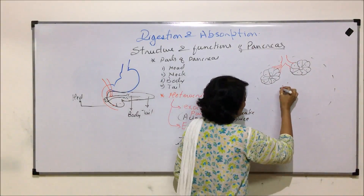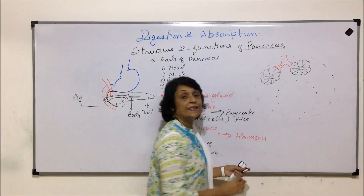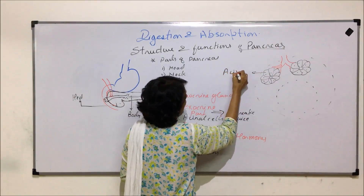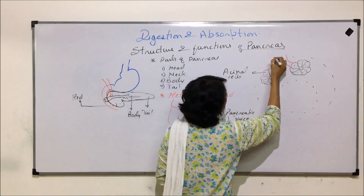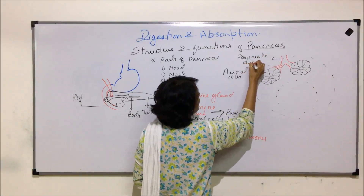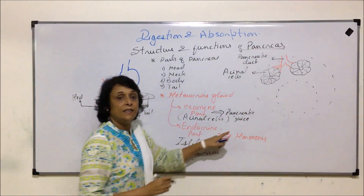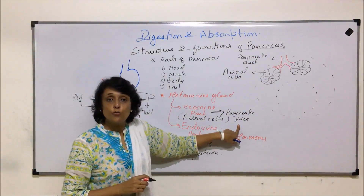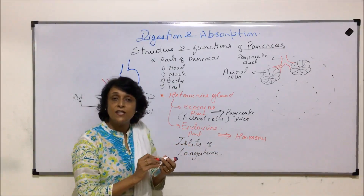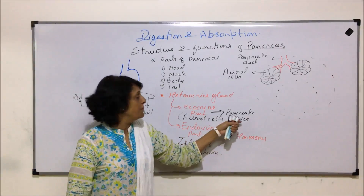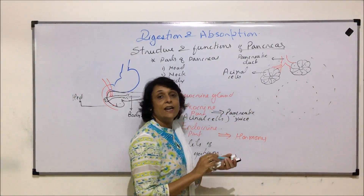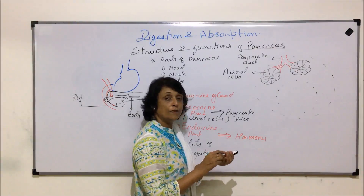Coming to the islets of Langerhans — that is the endocrine part. The acinar cells produce pancreatic juice via the pancreatic duct. This pancreatic juice contains enzymes: protein-digesting, fat-digesting, and lipid-digesting enzymes.